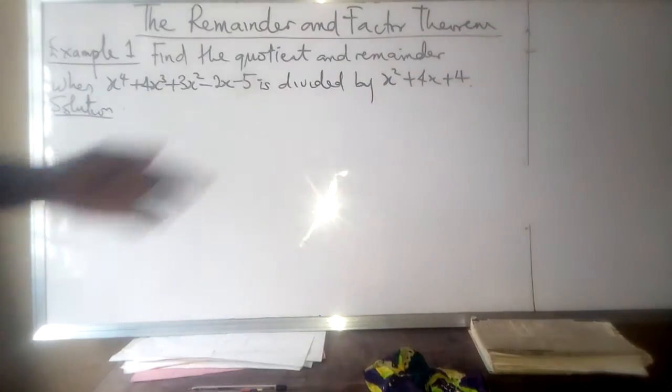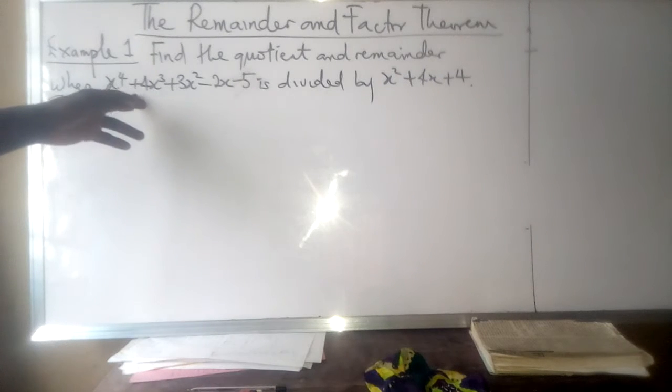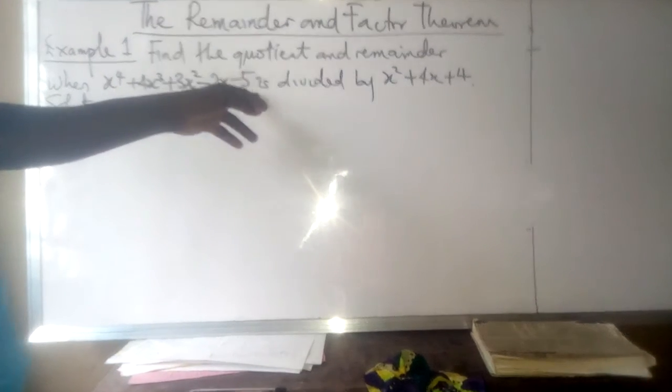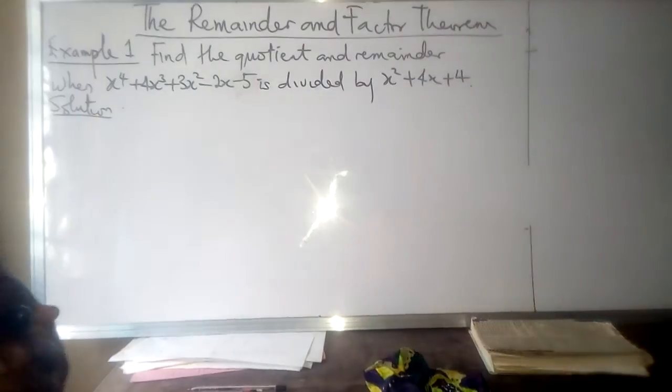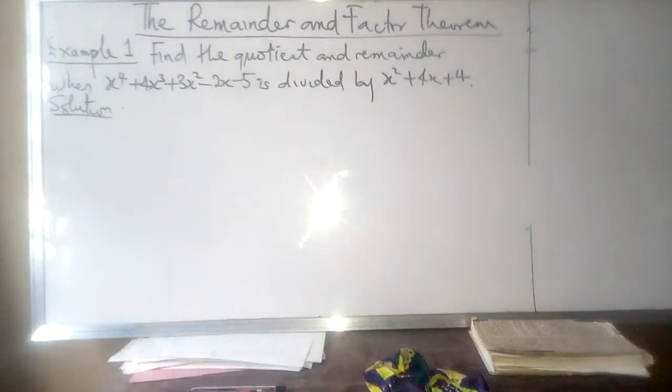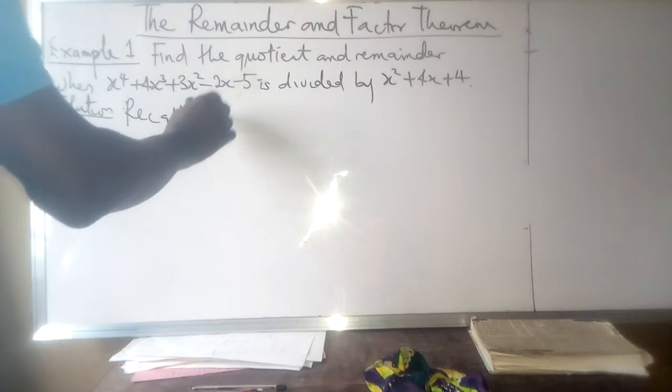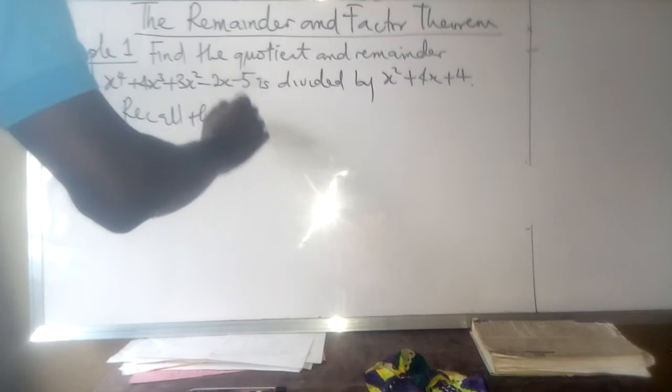Find the quotient and remainder when x⁴ + 4x³ + 3x² - 2x - 5 is divided by x² + 4x + 4. We recall that in polynomial division, P(x)